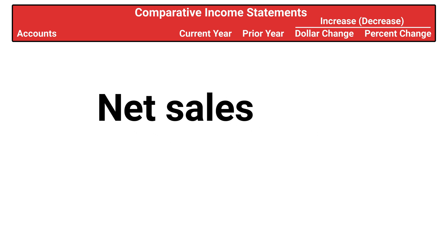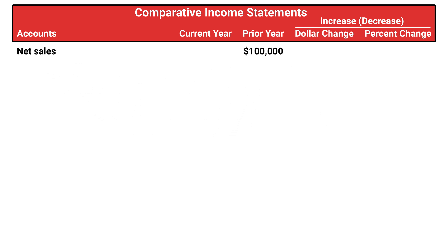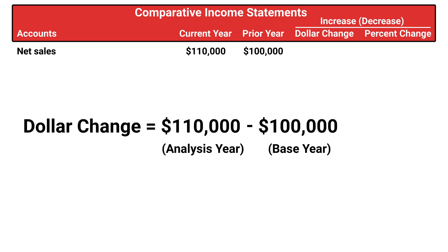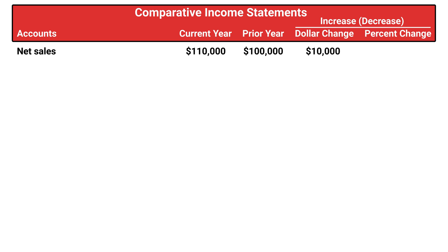How do we actually do horizontal analysis? One way is by computing the dollar change from one period to the next. For example, let's look at a company that reports net sales of $100,000 in the prior year and $110,000 in the current year. To compute the dollar change, we take the analysis or current period amount, which in our example is $110,000, and subtract the base period amount, which in our example is the prior year amount of $100,000, and this gets us a dollar change of $10,000. This number is useful as we can now see that net sales increased $10,000 from the prior year to the current year.